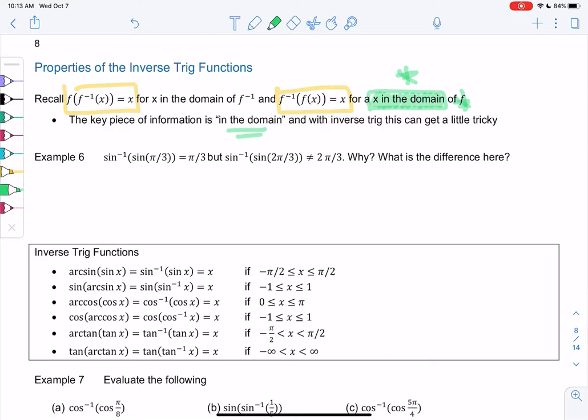So let's check this out. Sine inverse of sine of π over 3 is π over 3. Basically, they cancel each other out. But this is only true because π over 3 is in that restricted domain, or the range of sine inverse. But sine inverse of sine of 2π over 3 is not 2π over 3. We'll figure out how to do this in a second. But this is not in the range.